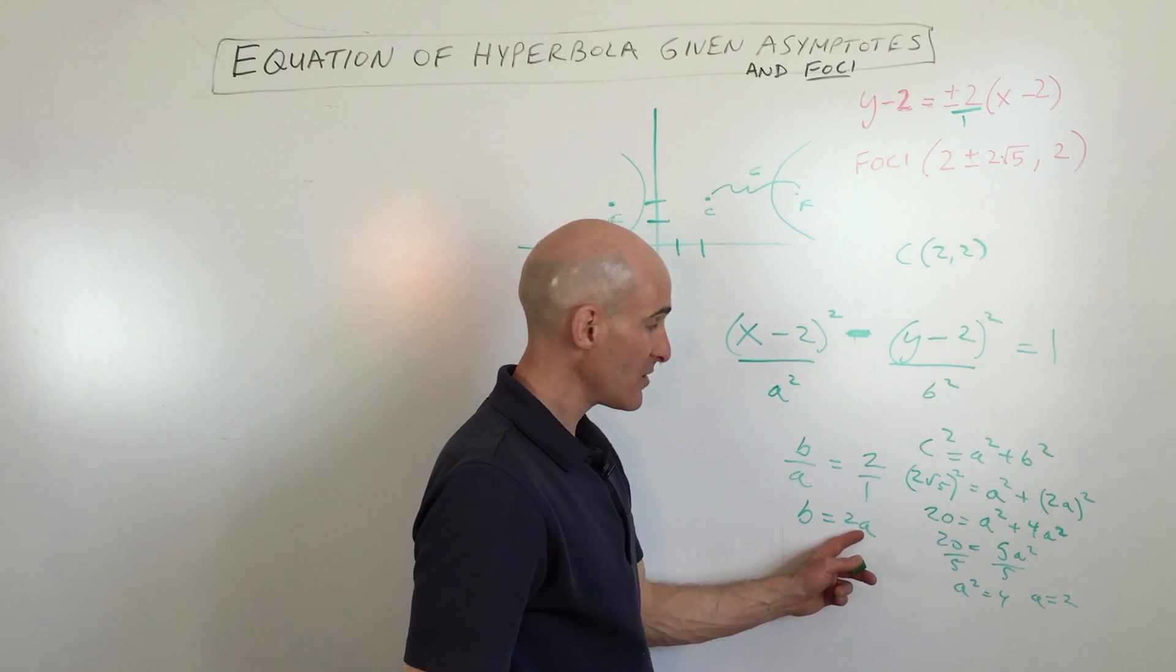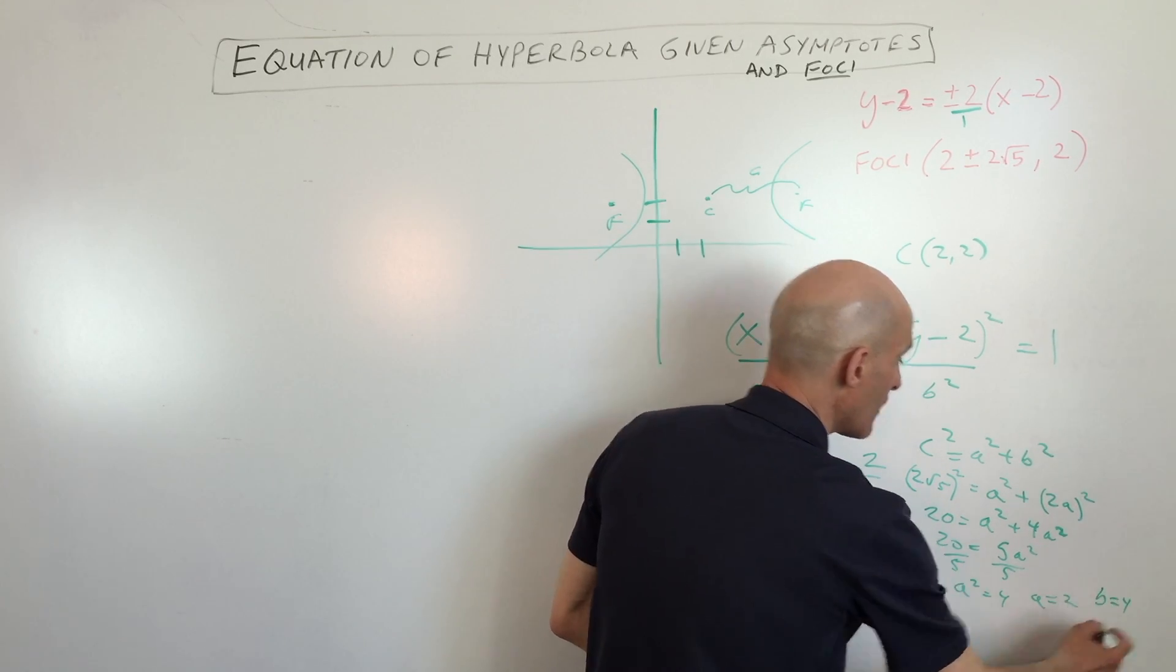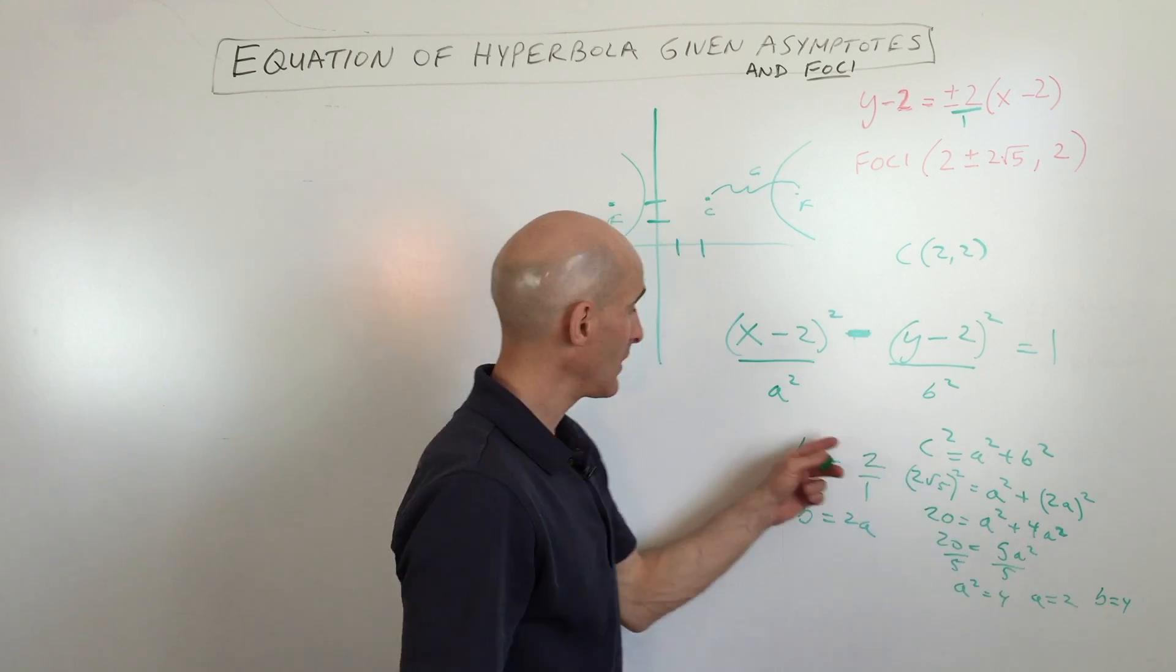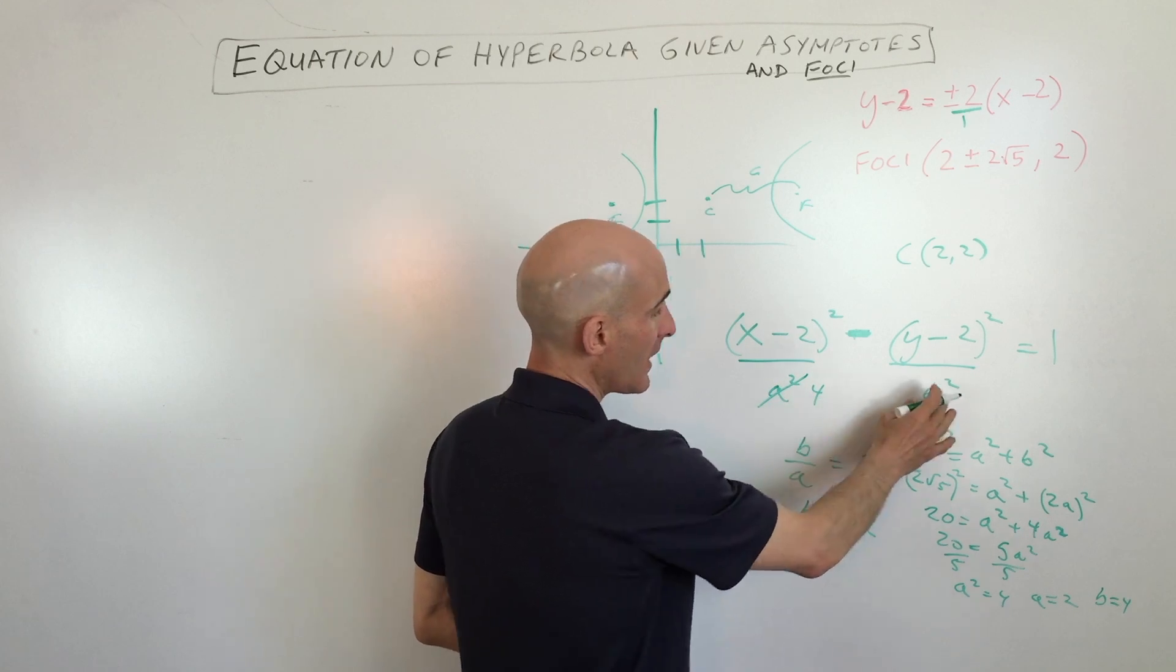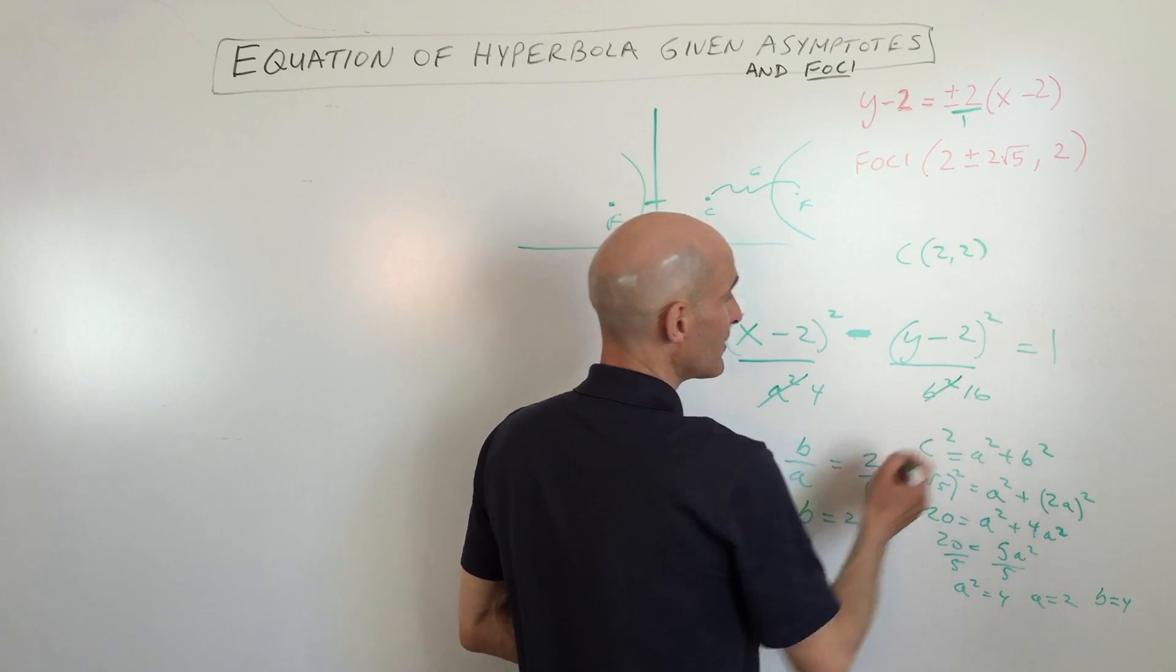Now, if we put 2 back in here, you can see that b is going to equal 4. So if we substitute those values back in, if a is 2, a squared would be 4, so let's just cross this out, this is 4, and b squared is going to be 4 squared, which is 16. So those are the two.